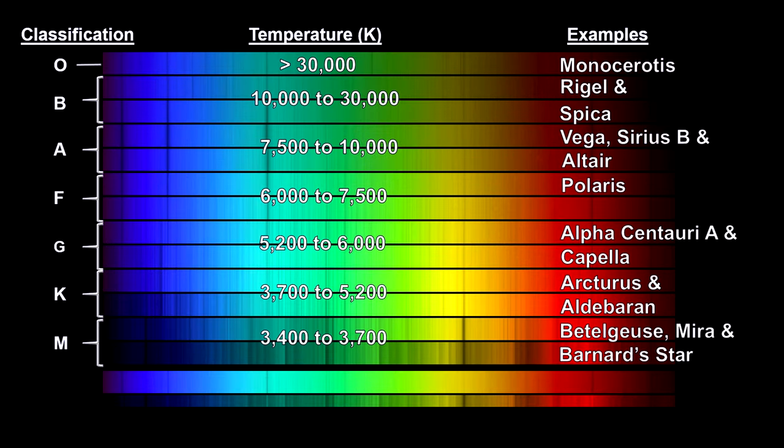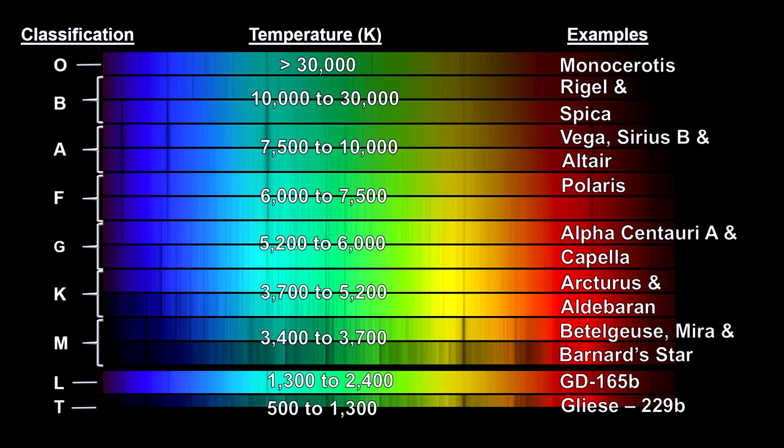Two new stellar classifications have been added to cover these objects. Spectral class L represents the larger mass brown dwarfs and may include some low mass red stars. Spectral class T will be the lower mass brown dwarfs.